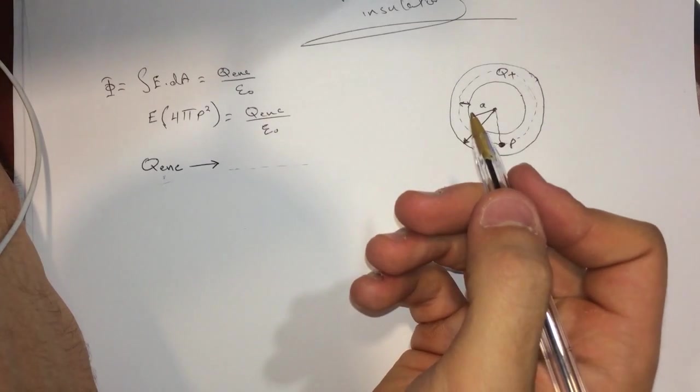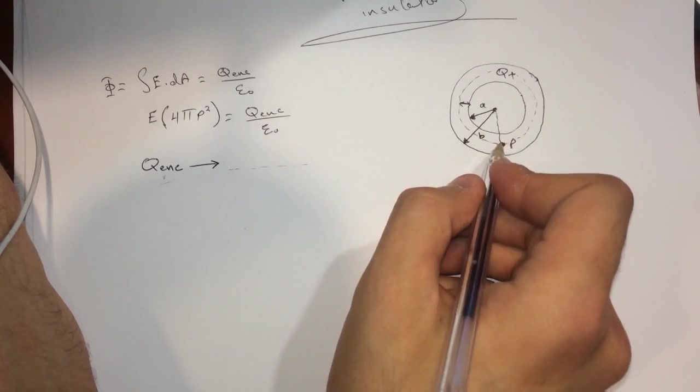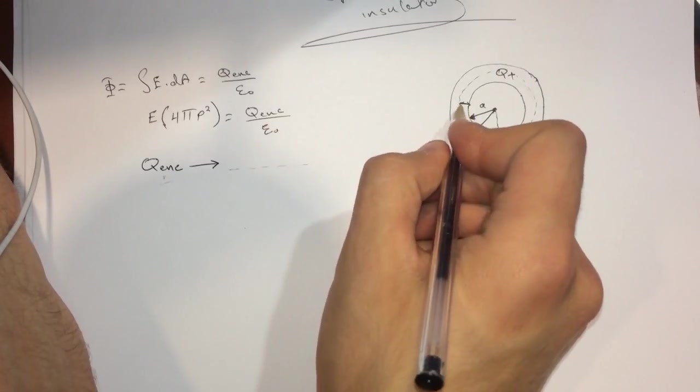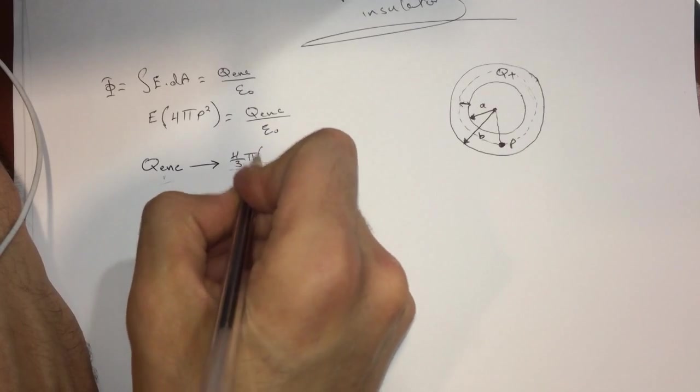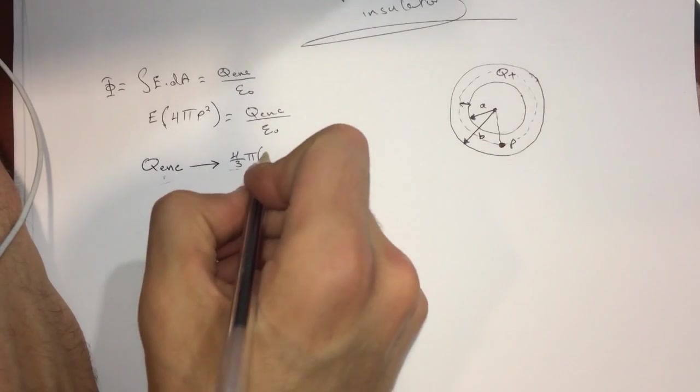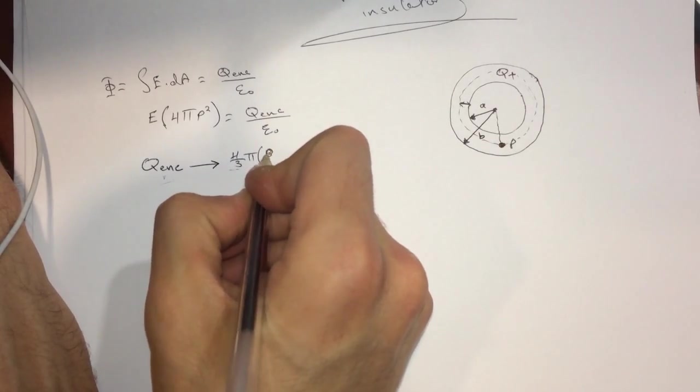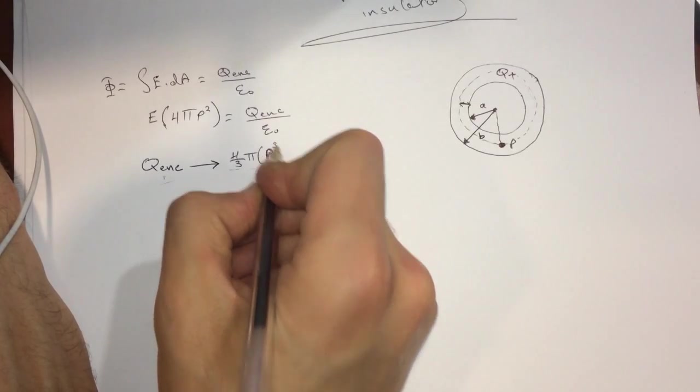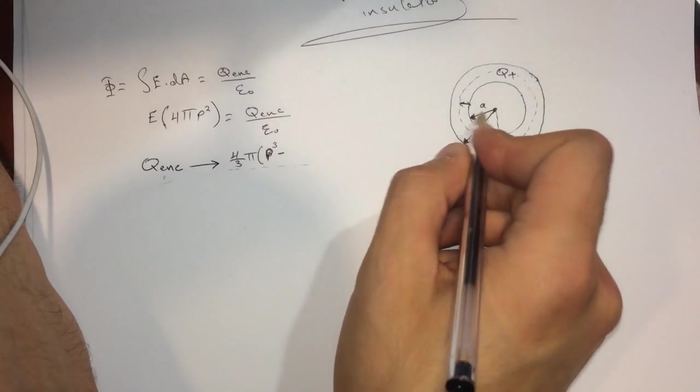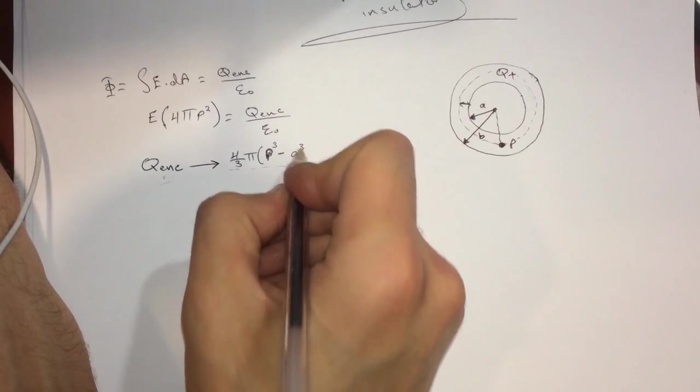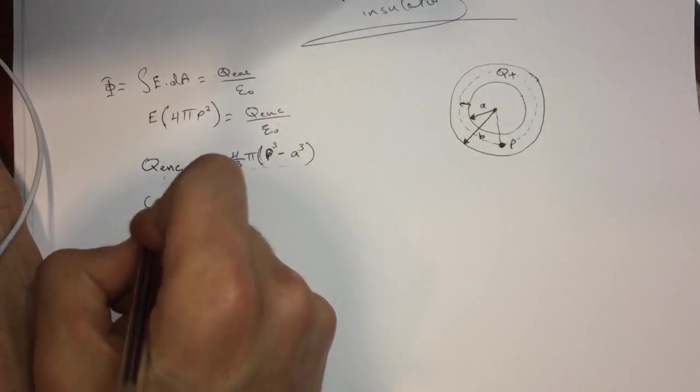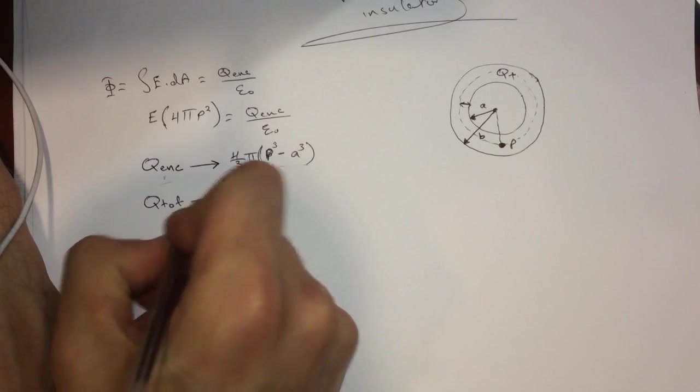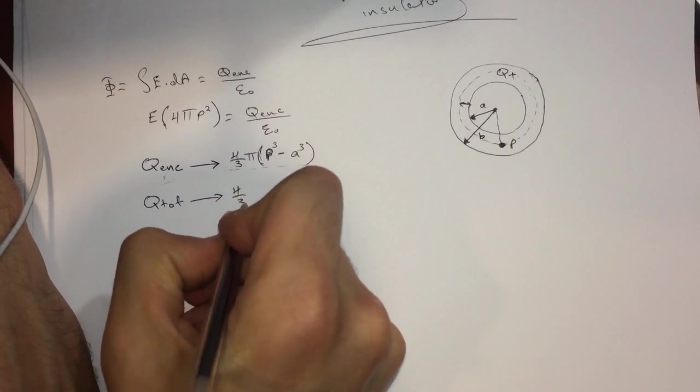So the volume from here to here will be 4 over 3 π and then the P cubed, it should be P³ minus A³.